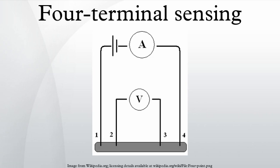Four-terminal sensing is also known as Kelvin sensing, after William Thomson, Lord Kelvin, who invented the Kelvin bridge in 1861 to measure very low resistances using four-terminal sensing.